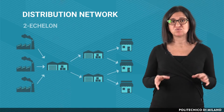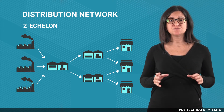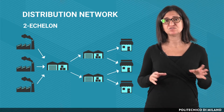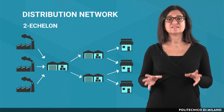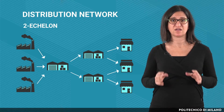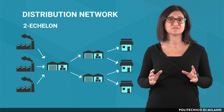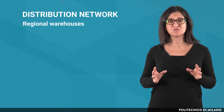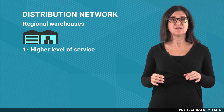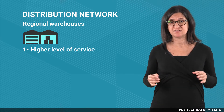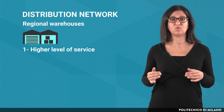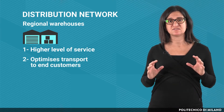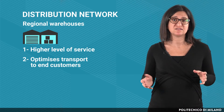Let's now switch to a two-echelon distribution network, where goods pass through two different levels of the distribution network from the points of origin to the customers. The second level, which consists of regional warehouses, provides supplementary functions: it ensures a higher level of service in terms of both cycle time and punctuality, since regional warehouses hold inventories facing the demand of a specific area, and it optimizes transport to end customers, that is the local distribution.